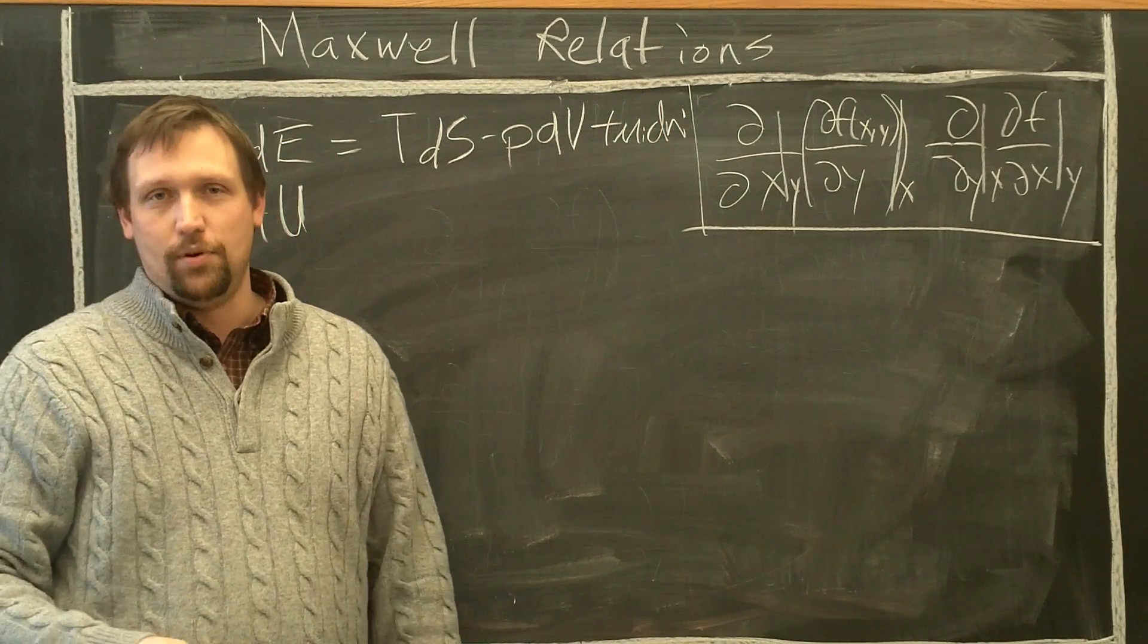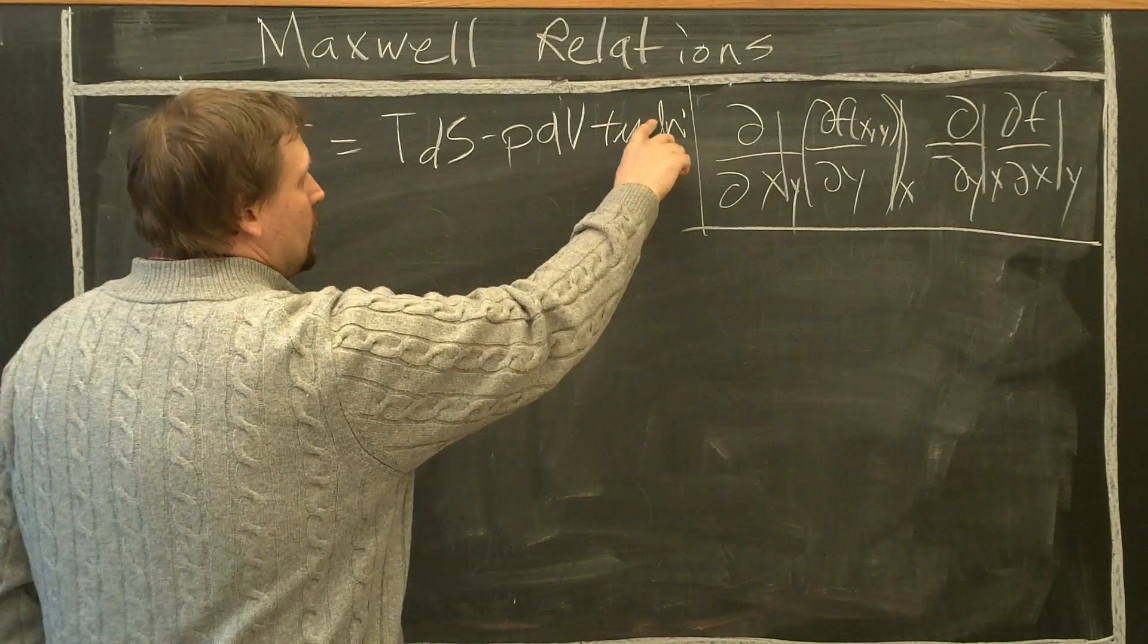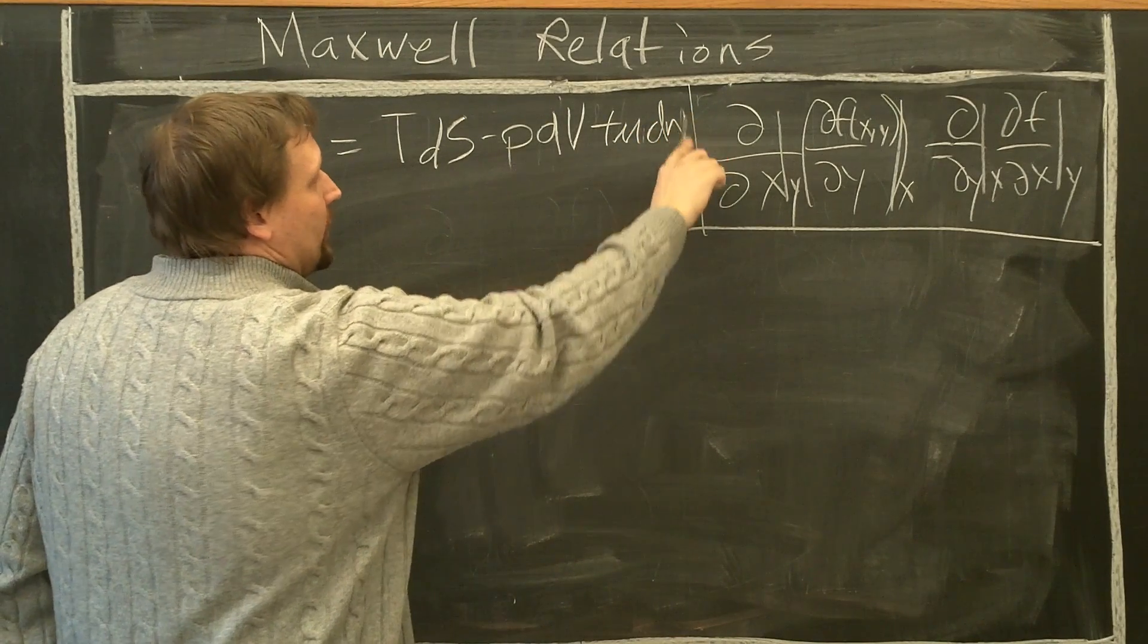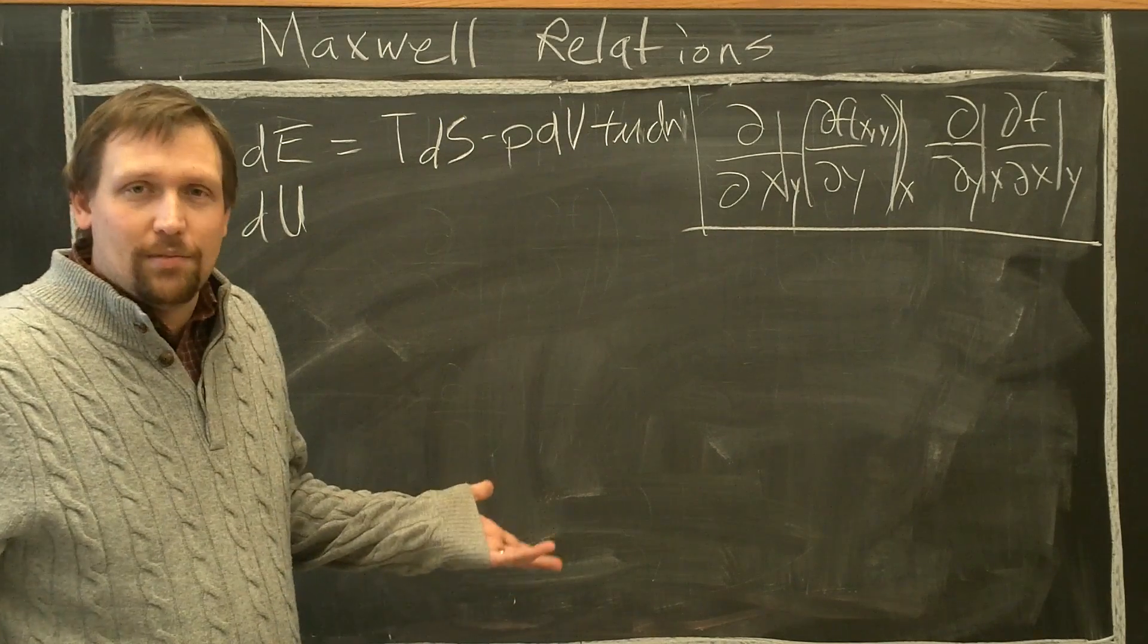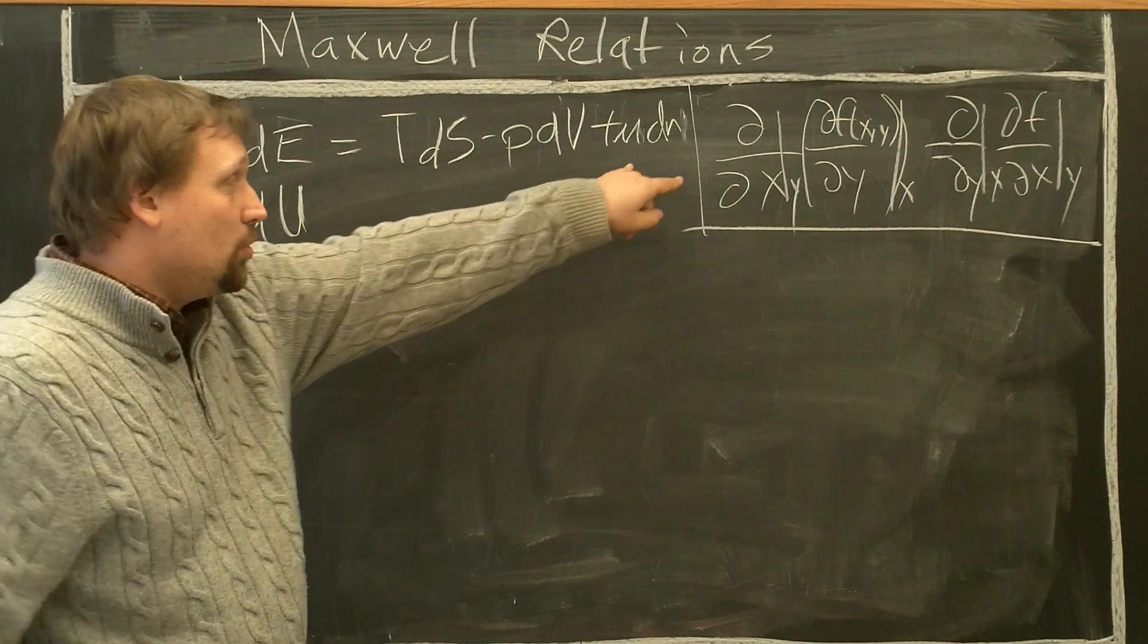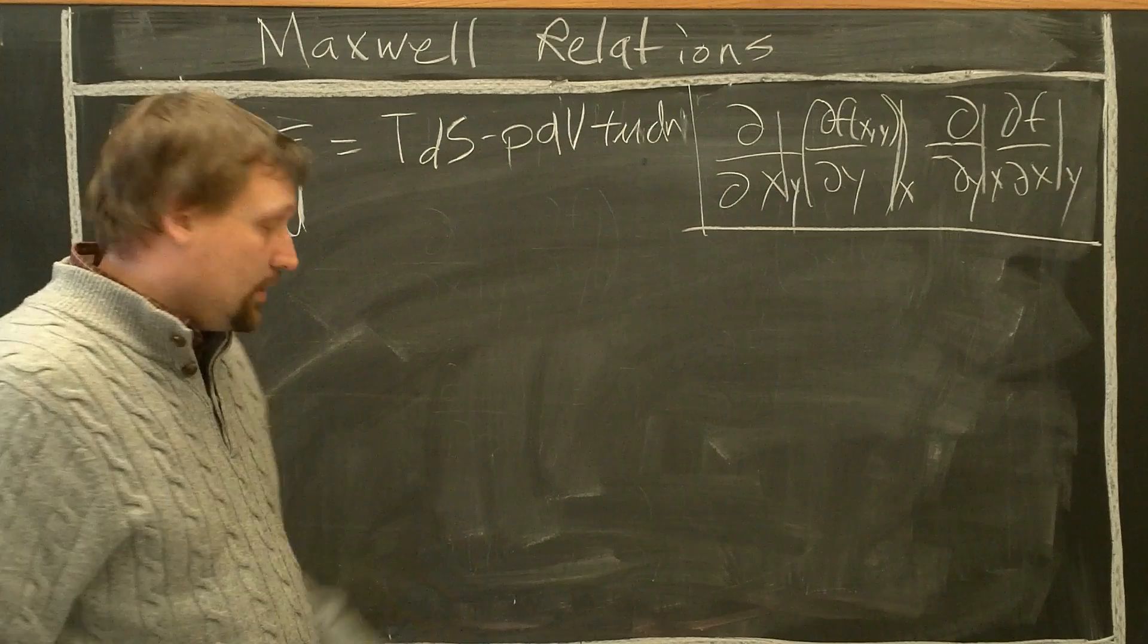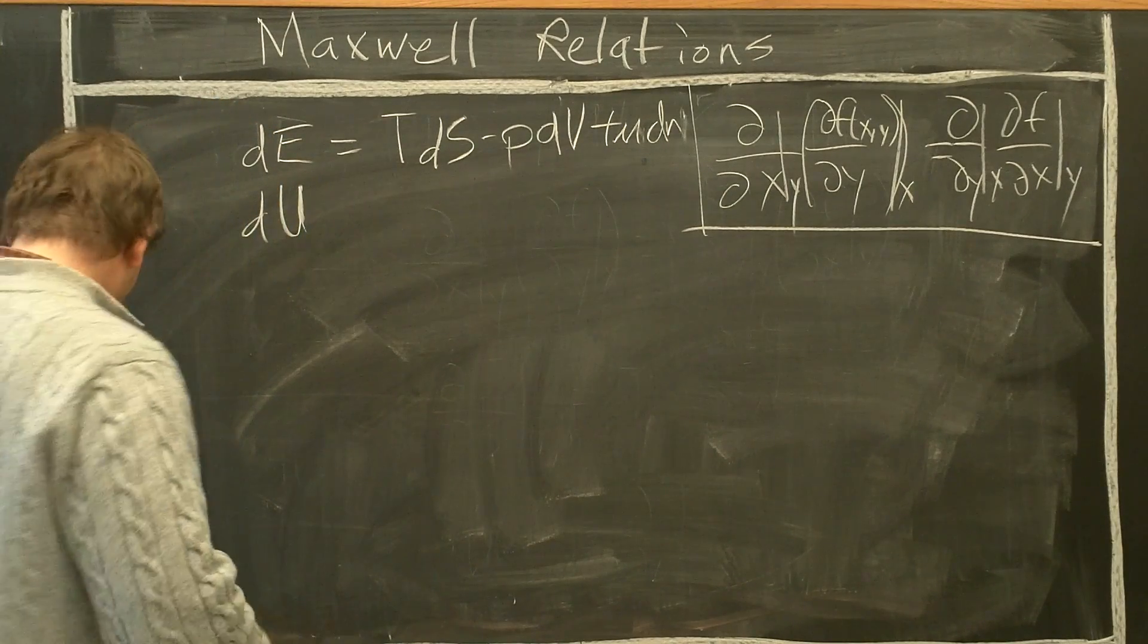For now, let's just consider a one-component system, in which case these μ's will just be left without an index. But this can be easily extended to more than one variable if you have more additional compounds, species in your system.